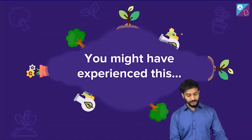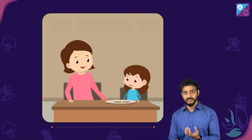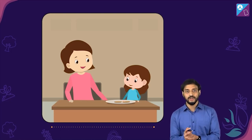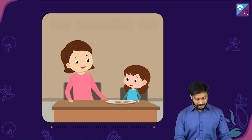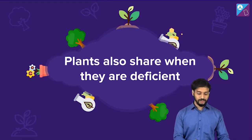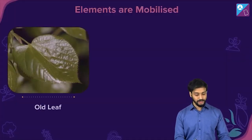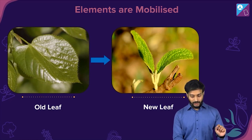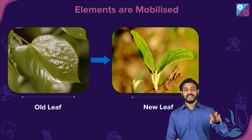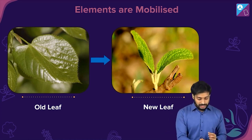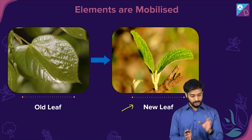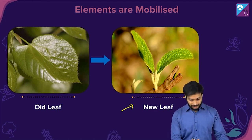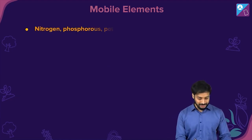Think of it like this: when there is some food left and you're very hungry, your parents will offer it to you. Something similar happens in plants. Plants also share nutrients when they are deficient. Nutrients from the older leaves are broken down and transported to the younger leaves because these leaves need to grow.